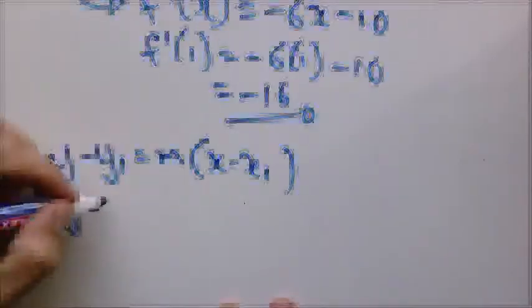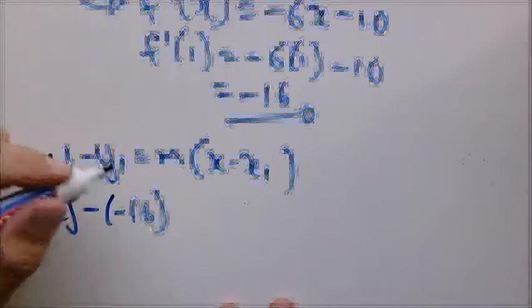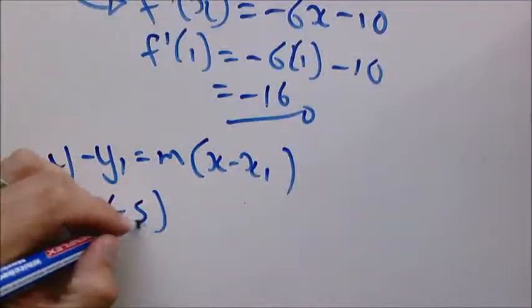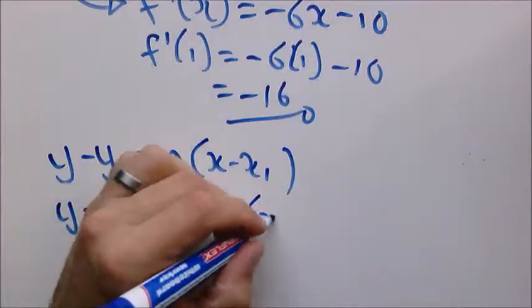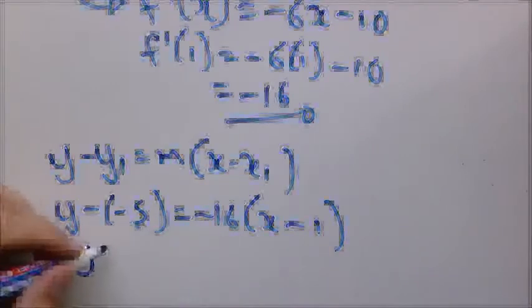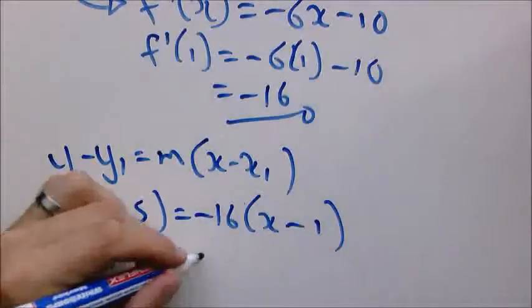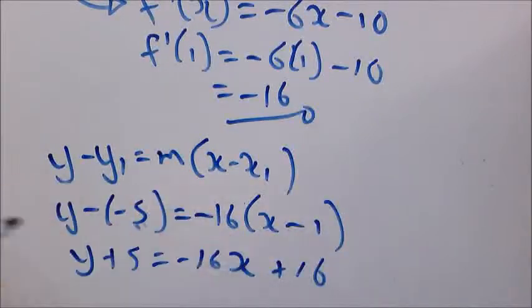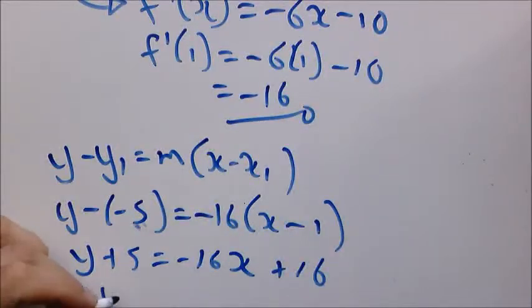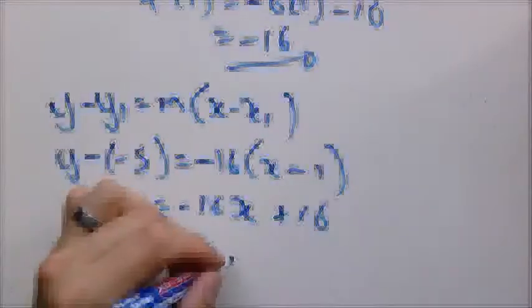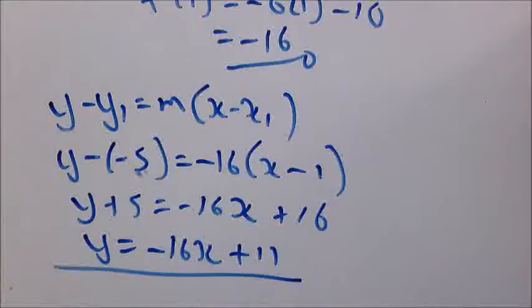So Y minus Y1 equals M times X minus X1. So Y minus negative 16, I mean 5, my apologies. So Y minus 5 equals negative 16 times X minus 1. So Y equals negative 16X minus 1. So Y plus 5 equals negative 16X plus 16. So Y equals negative 16X plus 11.